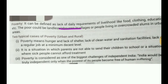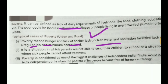Two typical cases of poverty are discussed in this chapter — one from rural areas and one from urban areas. Poverty means lack of food, shelter, clean water, sanitation facilities, and a regular decent job. It is also a situation in which parents are not able to send their children to school.